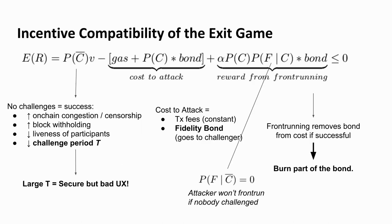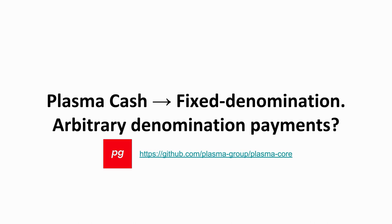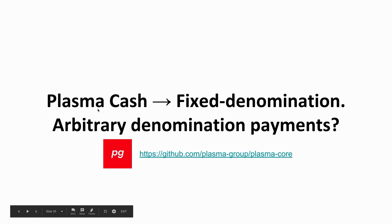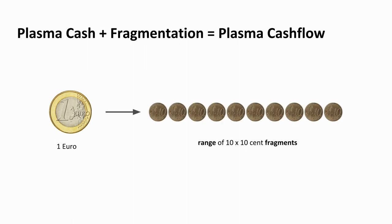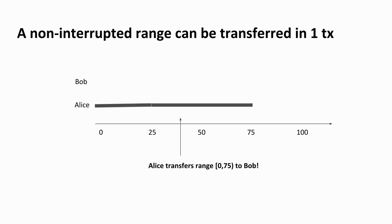We've done some work to make sure the incentive compatibility is less than zero — there's an equation to show that. So far we showed how to do fixed denomination payments: I have a five ETH coin and I give it to somebody else. For arbitrary denomination payments, the idea is I fragment my one euro into ten 10-cent fragments — it's literally a range of ten coins in a line. A non-interrupted range of ten coins or seventy-five coins in a row can be transferred in one transaction.